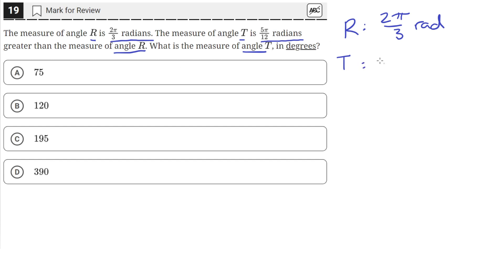So angle T is going to be 2π/3, which is the measure of angle R, plus 5π/12, since it's 5π/12 radians larger than R.